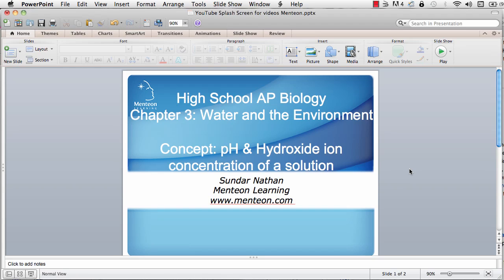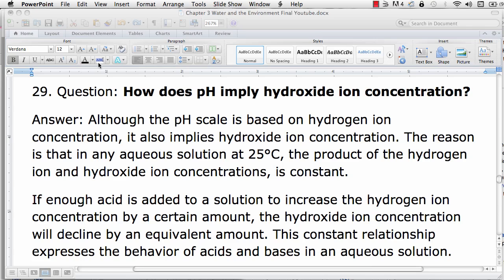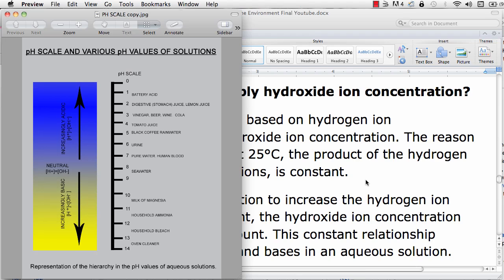AP Biology Chapter 3, pH and the hydroxide ion concentration of a solution. Although the pH scale is based on hydrogen ion concentration, it also implies hydroxide ion concentration. The reason for this is that in any aqueous solution, the product of the hydrogen ion and hydroxide ion concentrations is constant.